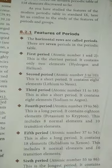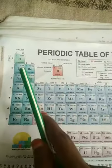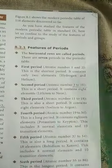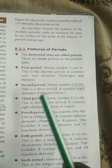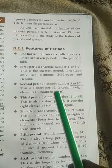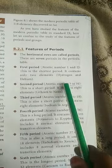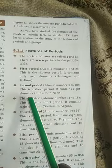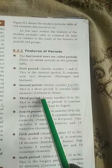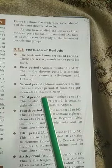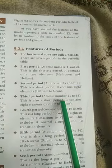The first period contains hydrogen and helium. Looking at the periodic table, the first element is hydrogen and the second is helium. The second period covers atomic numbers 3 to 10. It is a short period containing 8 elements, starting from lithium and ending at neon.